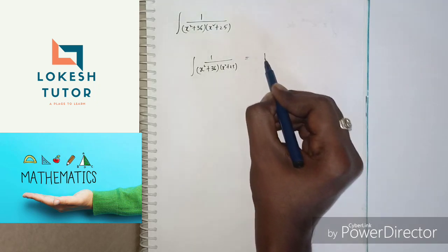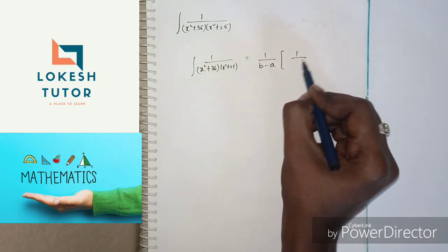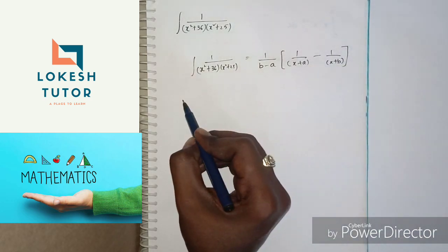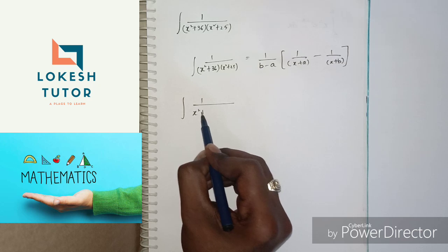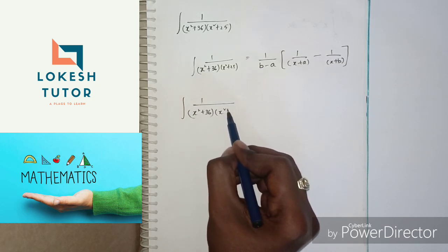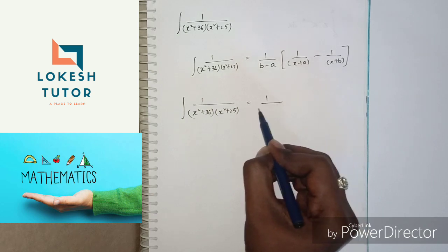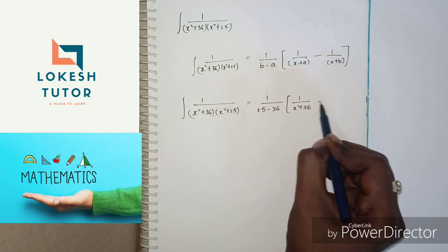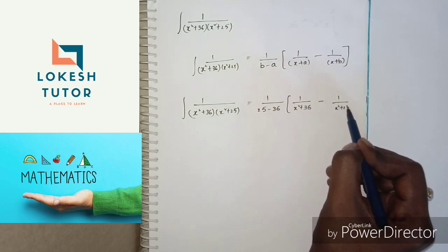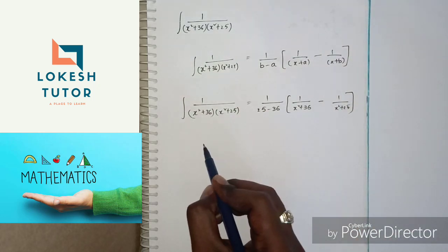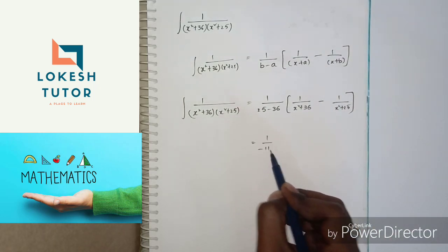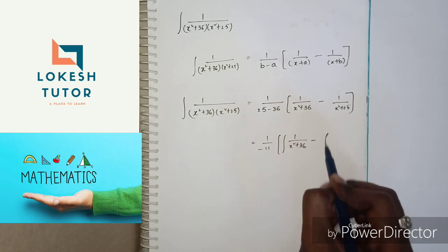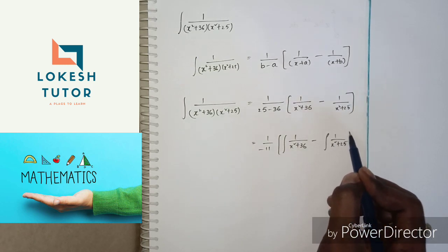Using the formula 1 by (b minus a) into 1 by (x plus a) minus 1 by (x plus b): 1 by (x squared plus 36) into (x squared plus 25) can be written as 1 by (25 minus 36) into 1 by (x squared plus 36) minus 1 by (x squared plus 25). That gives 1 by minus 11 into the integral of 1 by (x squared plus 36) minus the integral of 1 by (x squared plus 25).